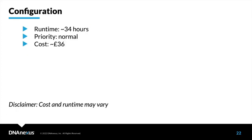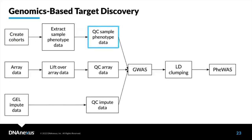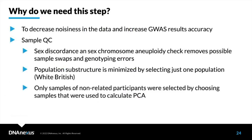Now we have all data prepared for the QC step. We'll do sample QC first, though the order doesn't matter. We need sample QC to remove possible sample swaps and genotyping errors, and to minimize the effect of population substructure.